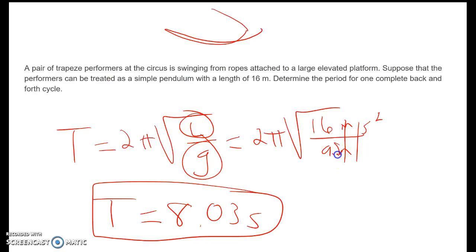So remember, G is 9.8, and the length of our rope determines the period.